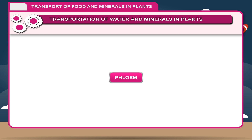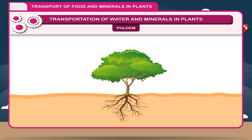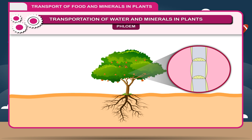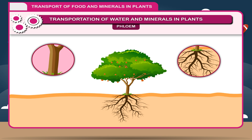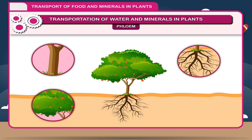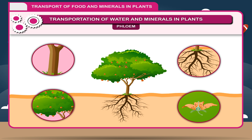Phloem consists of long, thin tubular structures placed one above the other. It conducts food produced in the leaves to the stems, roots, storage parts, and reproductive organs.